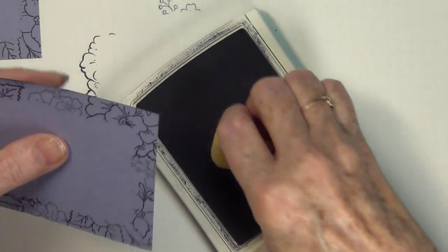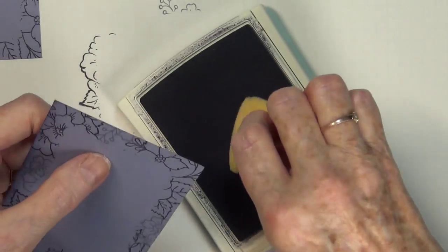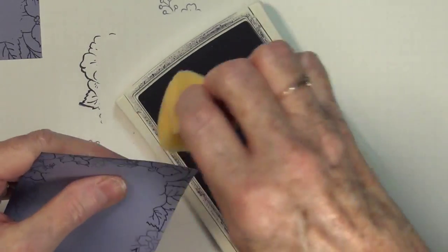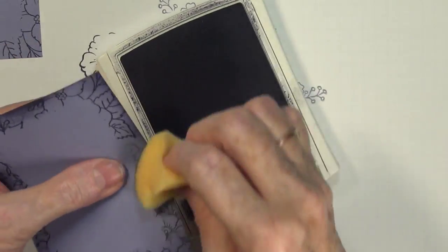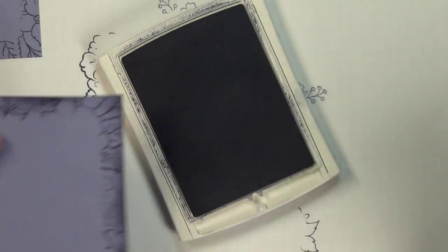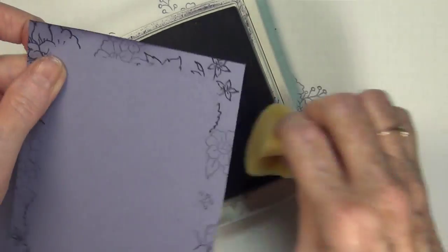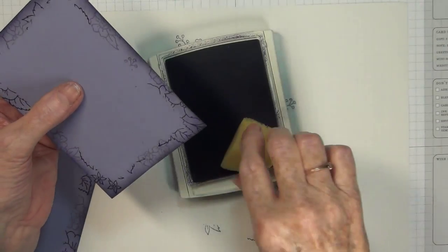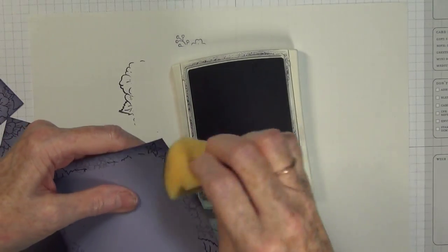I don't know what I would do without my Stampin' Up sponges. I have been buying those for many, many years and they last forever. When you purchase them, you get three in a package. When I get them, I take the one, cut it in half, and then I cut each one of those halves into one-thirds. And so you get a lot of sponge wedges. They really do last you a very, very long time.